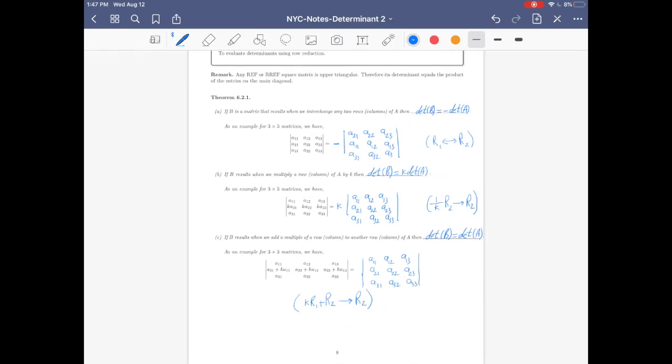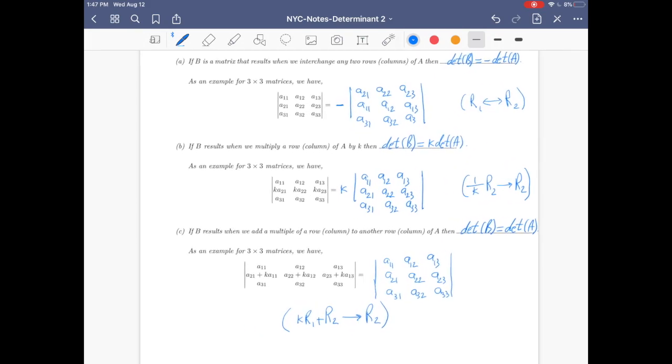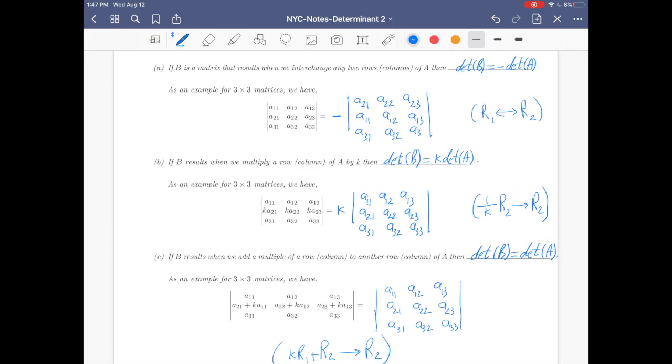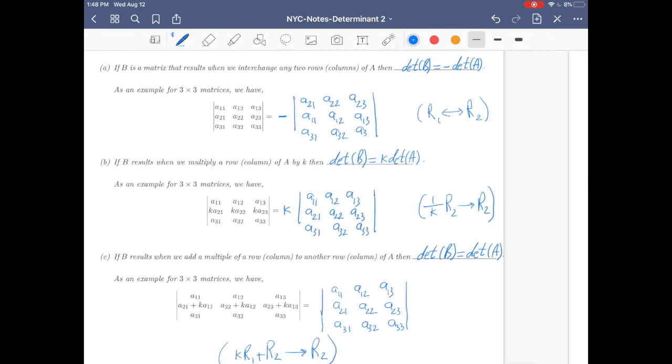So we've learned what will happen when you have these three types of operation, row operation. How does the determinant get changed?